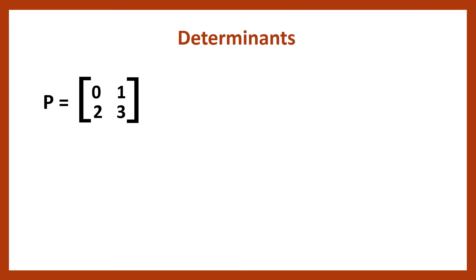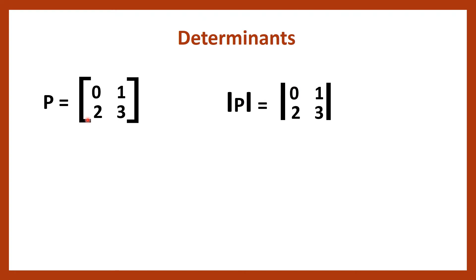For this P matrix, we can find a determinant value. The determinant of P is written as the determinant of 0, 1, 2, 3. This is written just like the absolute value of P — that is, P will be put inside two vertical lines. Instead of square brackets, we put the values between two vertical lines, and we call it the determinant of that matrix.